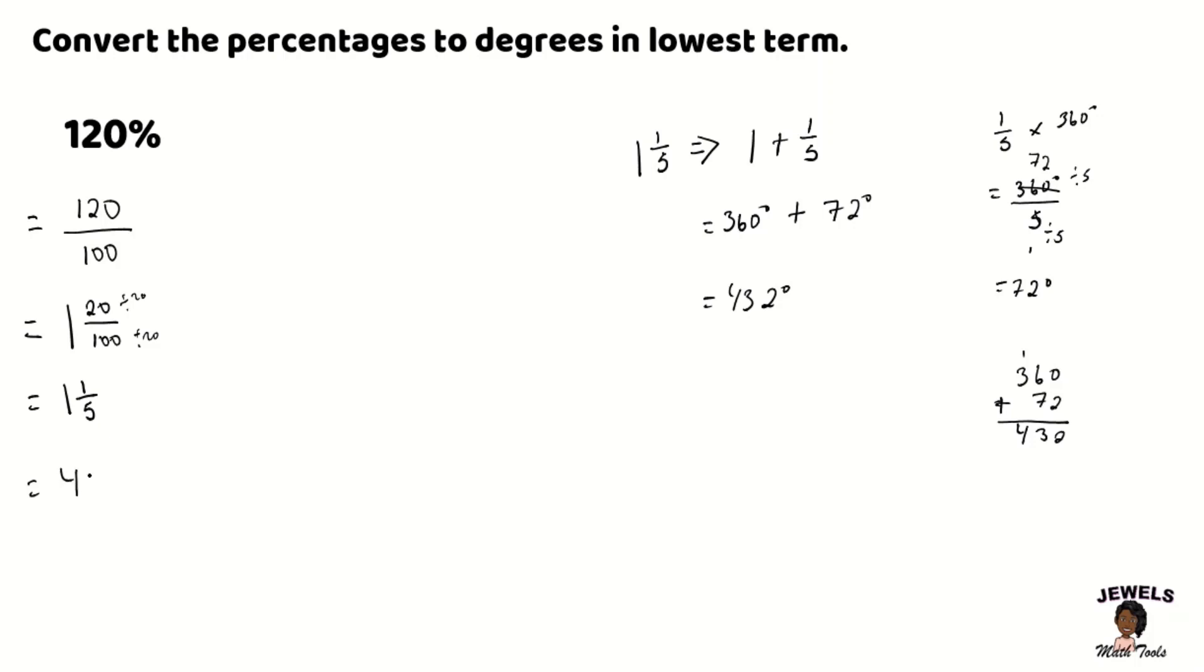So we see that when we change our percentage 120 percent into its mixed fraction form and then take each of the separate parts and convert our one whole to 360 which represents a complete revolution and then change our 1 fifth into degrees for 72 degrees and then sum those numbers together we found that again we got 432 degrees.